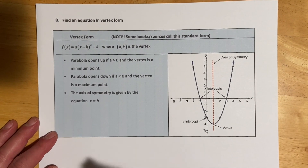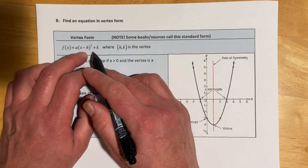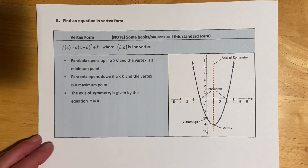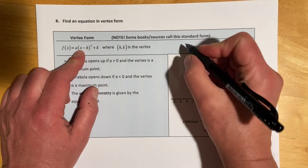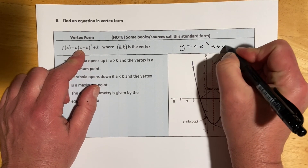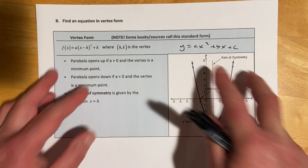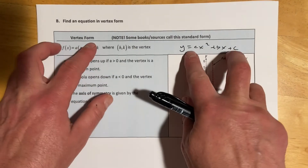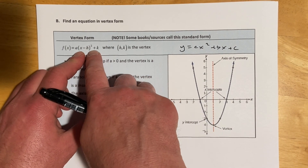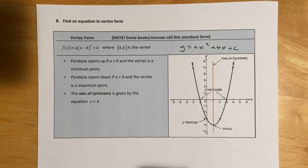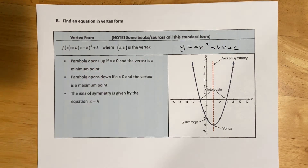I decided to break this into two videos because it was getting long — the second one will cover finding the formula rather than graphing. Here we're going to get what I call vertex form. Some books call this standard form, and then y equals ax squared plus bx plus c is general form. I'm used to that being standard form and this being vertex form, so I'll stick to that, but the directions should be clear about what they're looking for.